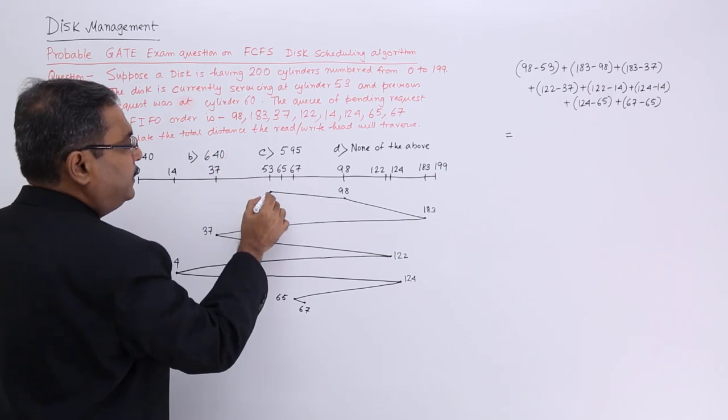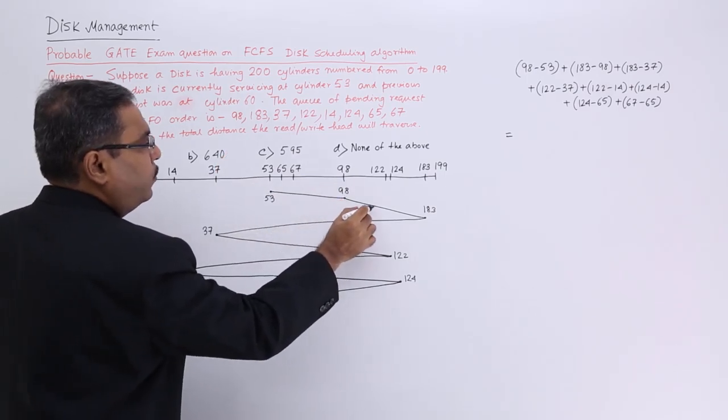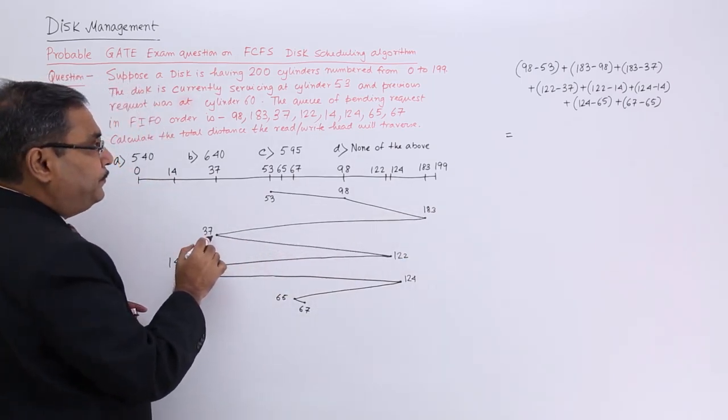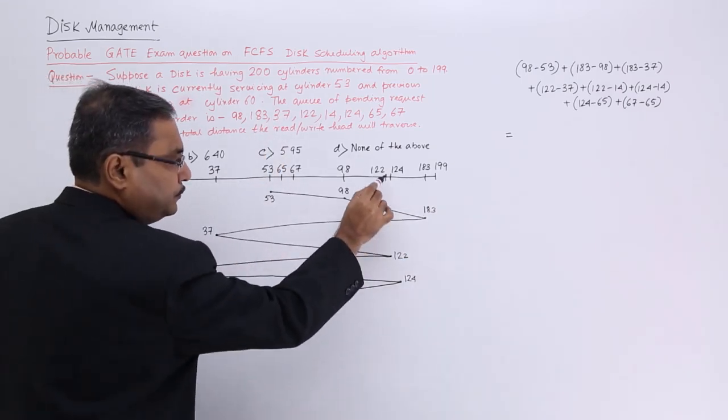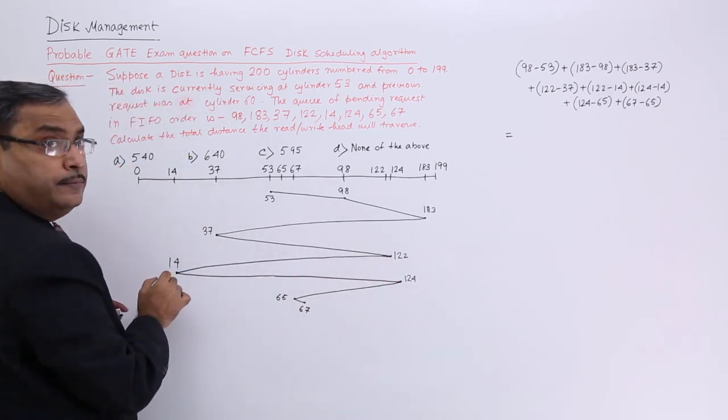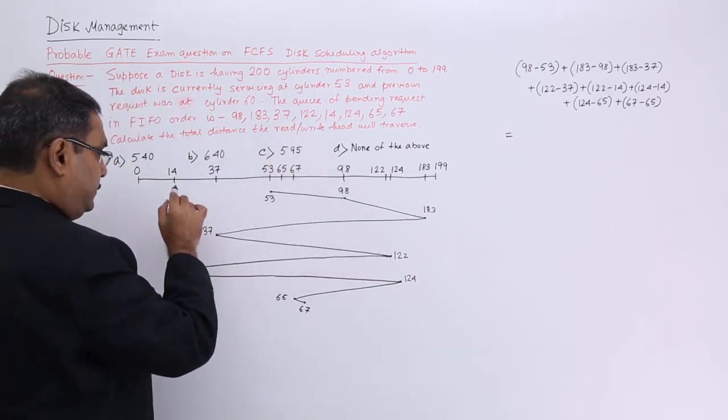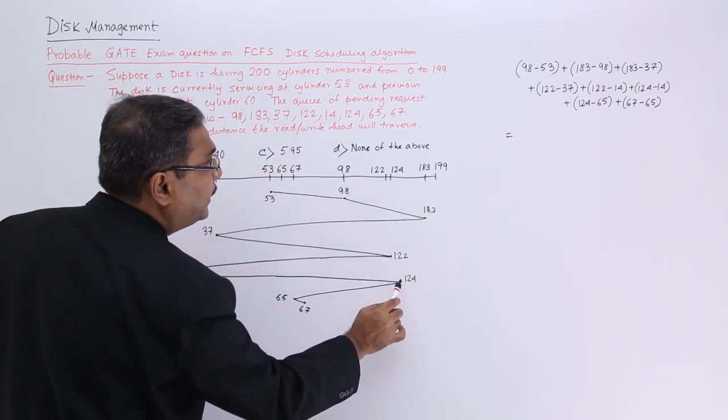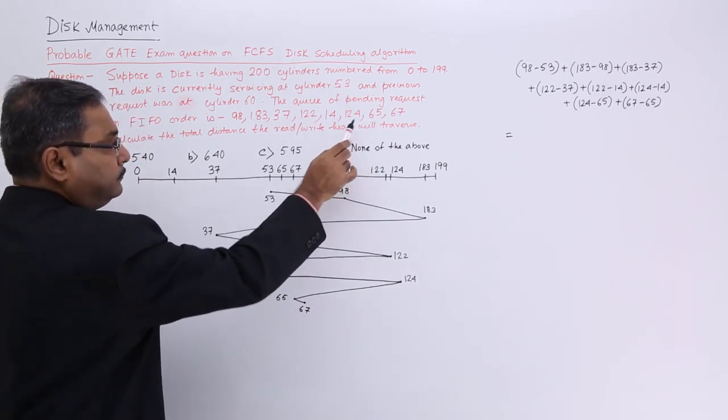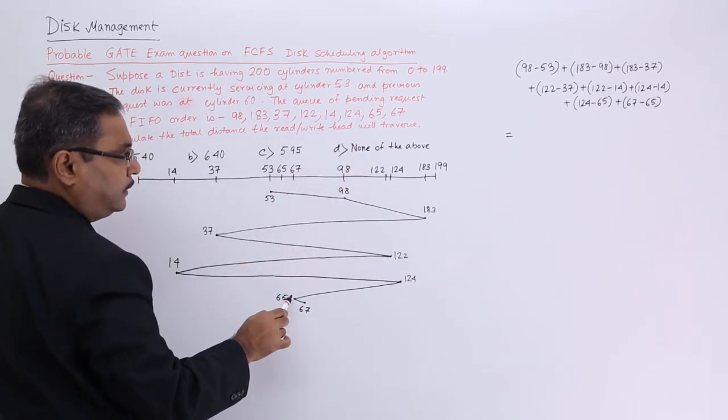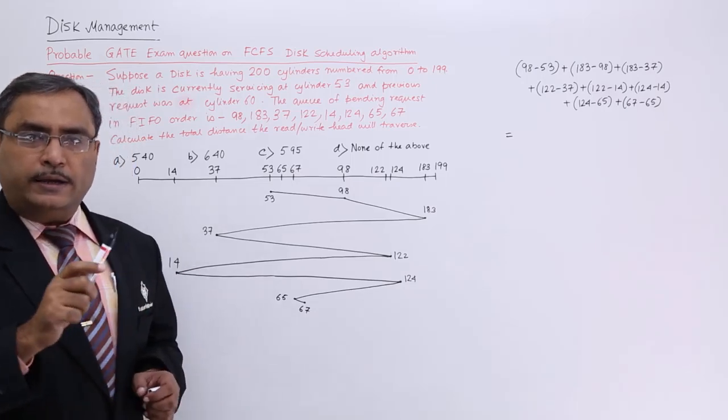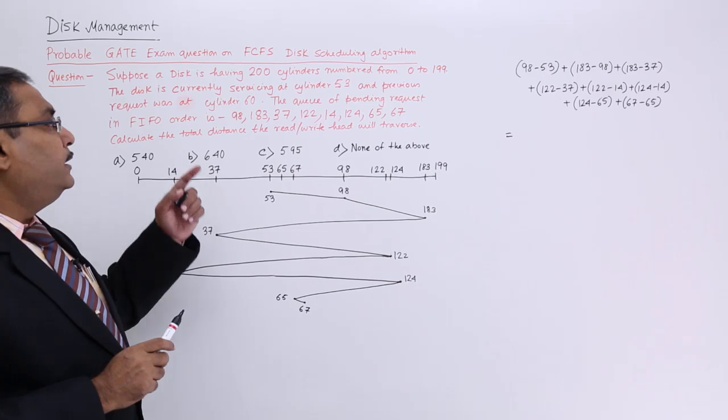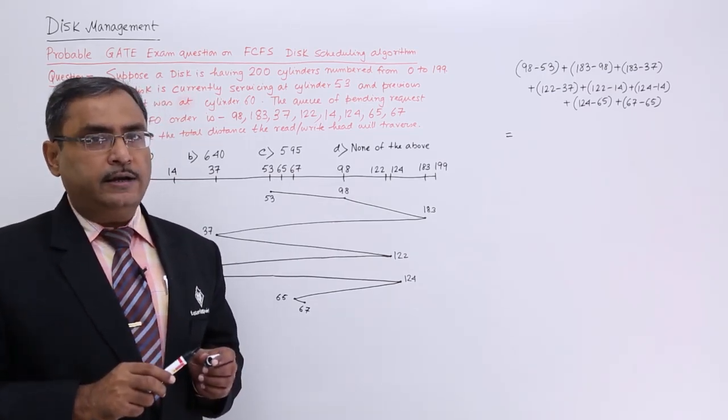At first, my read-write head is at cylinder 53. So from here 53 to 98, then 183, then I shall be coming to 37, then 122, then I shall come to 14, then I shall go to 124, then I shall come to 65, then I shall come to 67. So in this way my read-write head will move. What is the question actually? Calculate the total distance has been traversed by the read-write head.